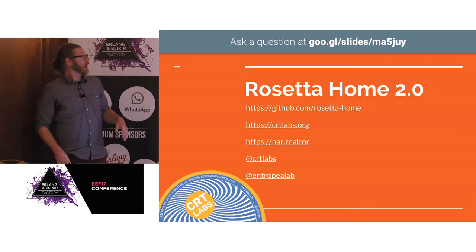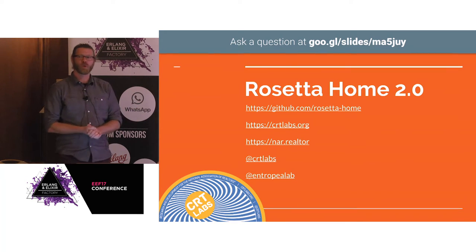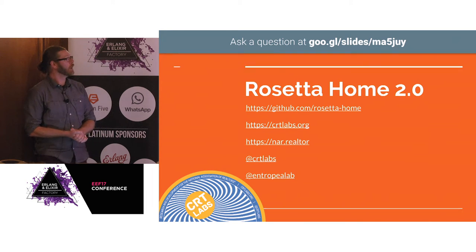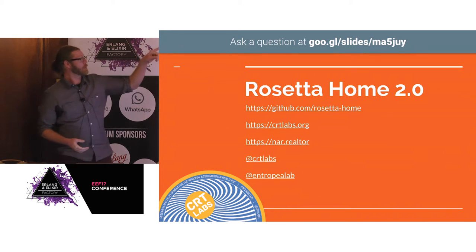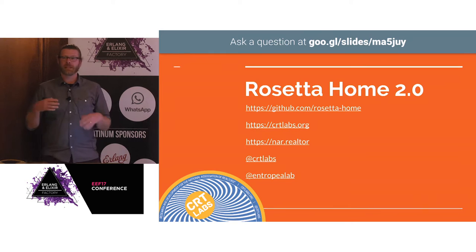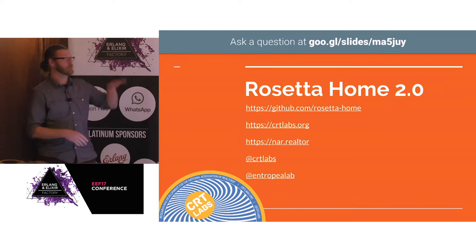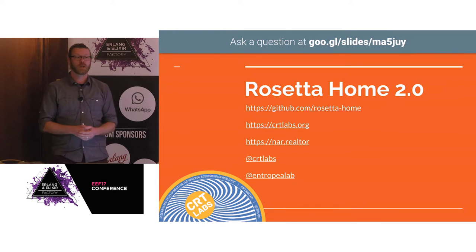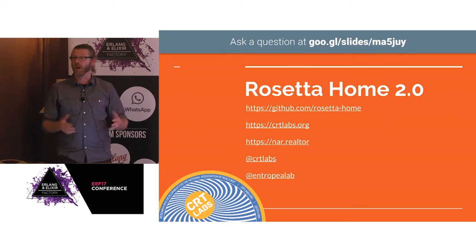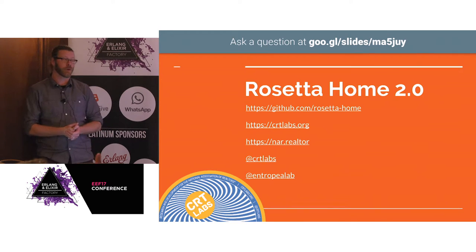Instrumenting the world with the beam. So we're on Rosetta Home 2.0 - that is the name of the project, and it's actually an organization on GitHub as well. You may have noticed that short URL for Google up there. Rather than holding your questions at the end and maybe forgetting, you can just ask them as we go. I get a little display of the questions popping up, and at the end I can show them on screen.